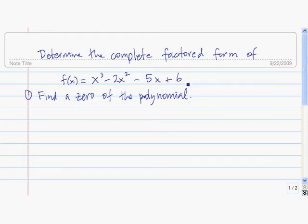To find the factored form of this polynomial, the first step that we need to do is to find a zero of the polynomial. The possible zeros of this polynomial are factors of 6, which is the constant term, divided by factors of 1, which is the leading coefficient.